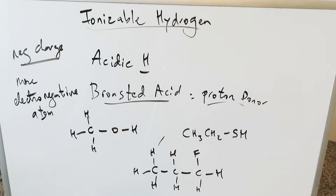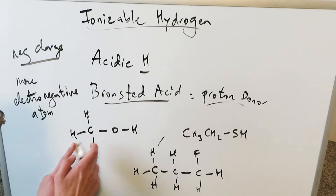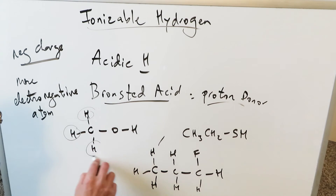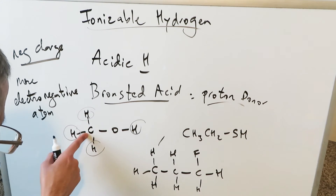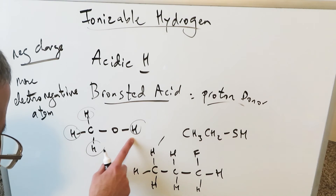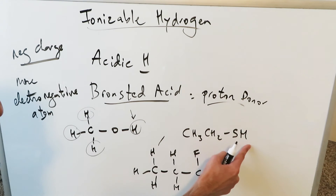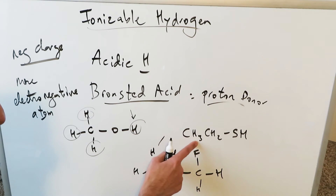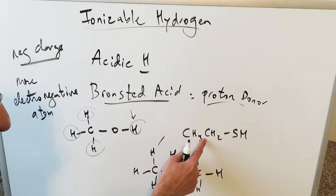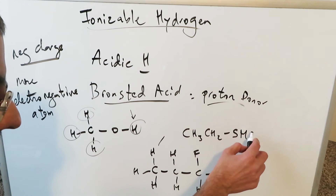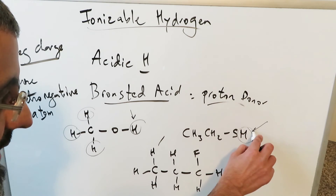Let's look at three quick examples. In this first compound, you have multiple hydrogens — three attached to carbon and one attached to oxygen. The hydrogen attached to oxygen is your ionizable or acidic hydrogen. In this second compound, there are hydrogens attached to carbon and one hydrogen attached to sulfur — that sulfur-attached hydrogen is your most ionizable hydrogen.